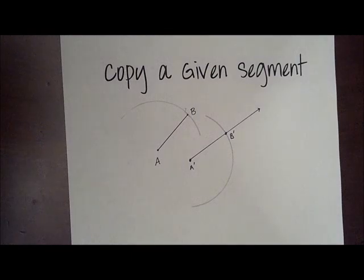And AB is the radius of the first circle. A prime B prime is the radius of the second circle. So radii of congruent circles are congruent is the justification for this construction.